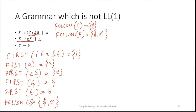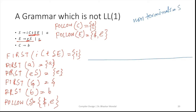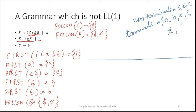So all the FIRST and FOLLOW have been calculated. Next we have to go for creating the parse table. How many non-terminals and how many terminals are there? The non-terminals are S, E, and C. The terminals are: A, B, E, I, T, and dollar.